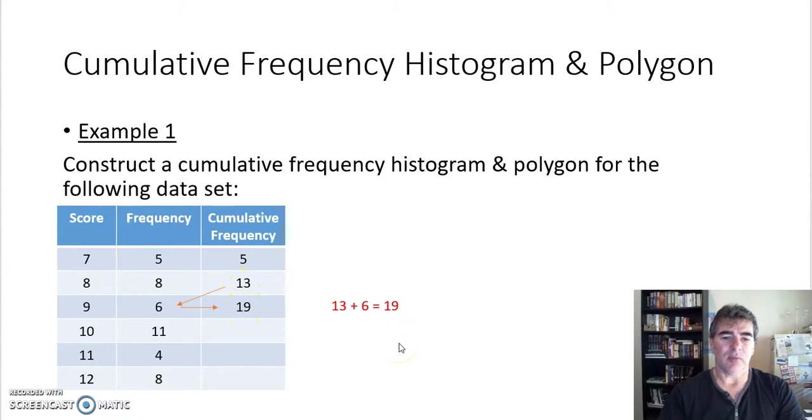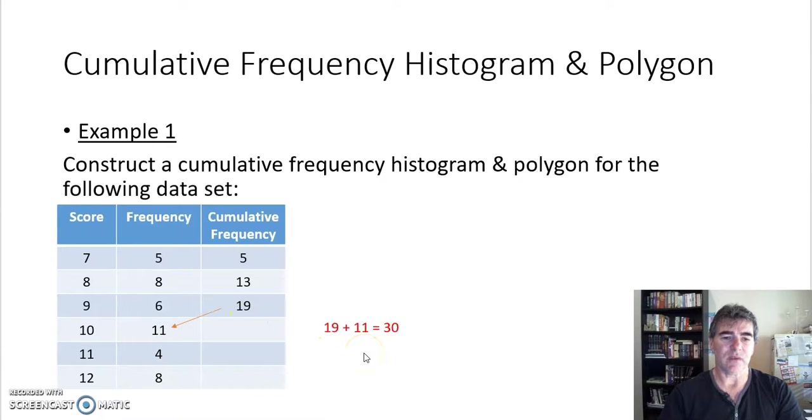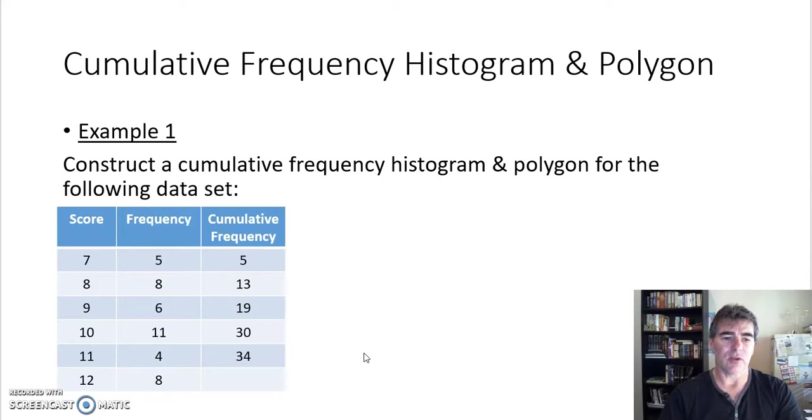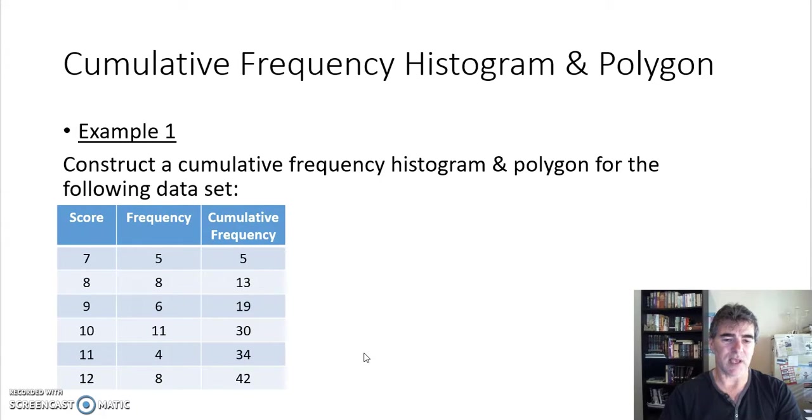And I'll continue that process, so 19 plus 11 is 30, write that in there, then 30 plus 4 is 34, and 34 plus 8 is 42. So that tells me there's 42 scores altogether. And if I actually found the total of the frequency column and put that down here, then that would tell me the same, that there's 42 scores altogether. So now that we've completed that table, let's construct our graph.